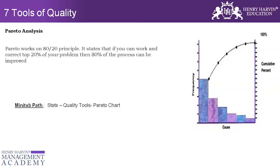The Pareto tool is used so that we make very little effort and are able to work on the major impact. In a usual organization or process, we have many problems to work on, and it is not possible to work on all of them at once. Therefore, we have to prioritize — identify the top 20 percent of issues so we can resolve 80 percent of the problems. That's why this tool is widely used. Pareto is a standard.